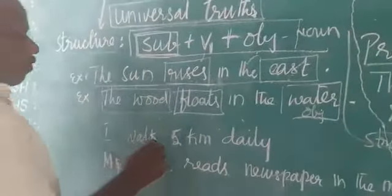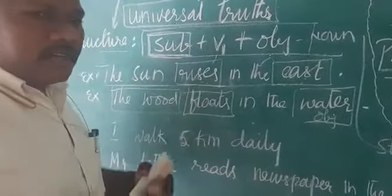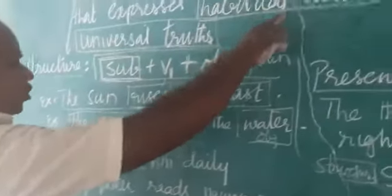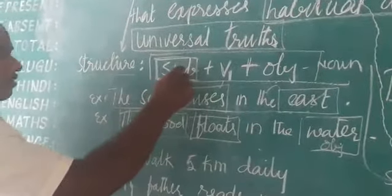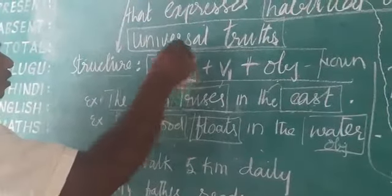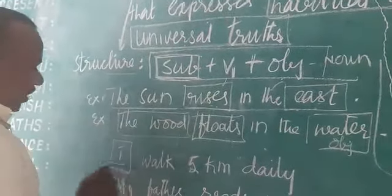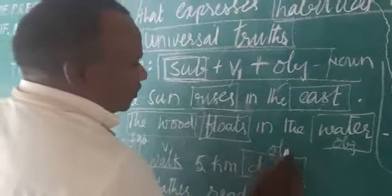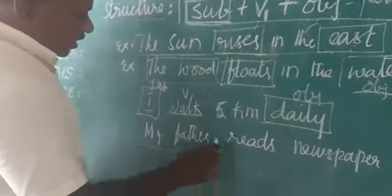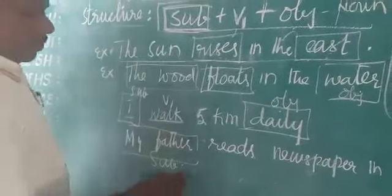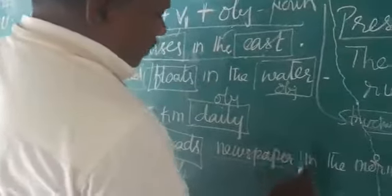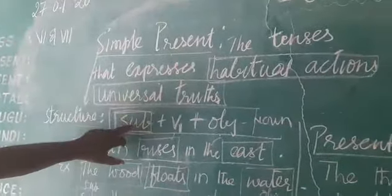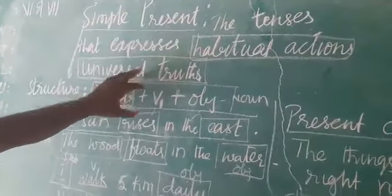What we do in our daily life with regularity — that talks about habitual actions. For example: 'I walk 5 kilometers daily.' Here 'I' is the subject, 'walk' is the V1, and 'daily' relates to the action. One more: 'My father reads the newspaper.' 'My father' is the subject, 'reads' is the V1, and 'newspaper' is the object. This is the way we write a simple present sentence — habitual actions and universal truths.